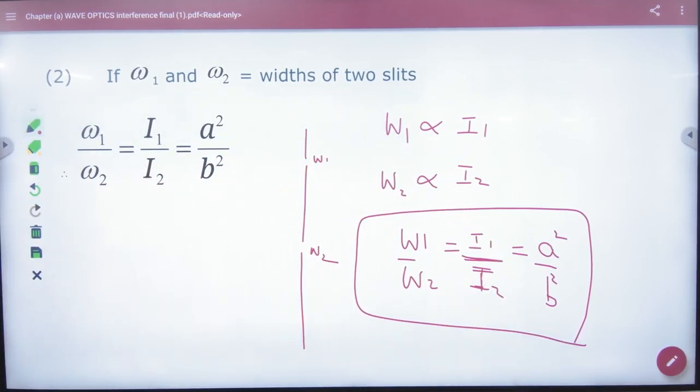This gives the ratio of width, intensity, and amplitude. Note that sometimes problems give the ratio instead of the actual values of intensity and width.